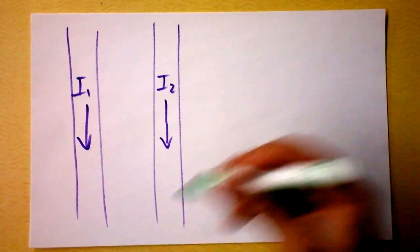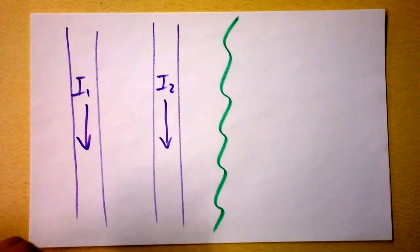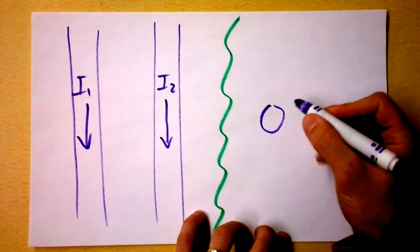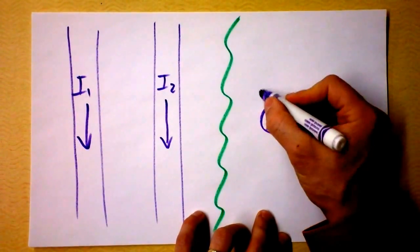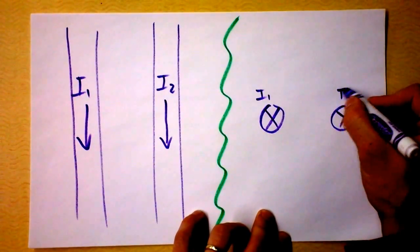So let me draw a divider here and we can see them in a different perspective. I want to see both of them going into the page. So here's current 1 and here's current 2.